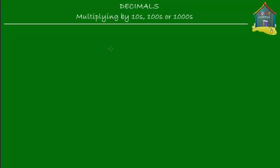Welcome to homecampus.com.sg. Let's learn how to multiply decimals by tens, hundreds and thousands. Let's take a decimal number first — say we have a number like 3.216. I want to multiply this number by 10 first and find out what that is equal to.